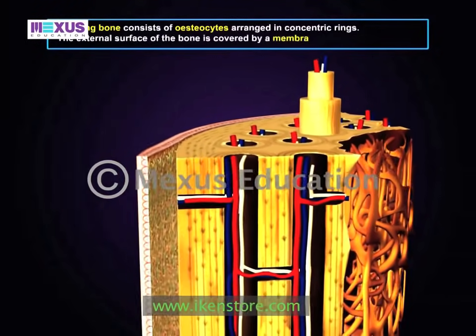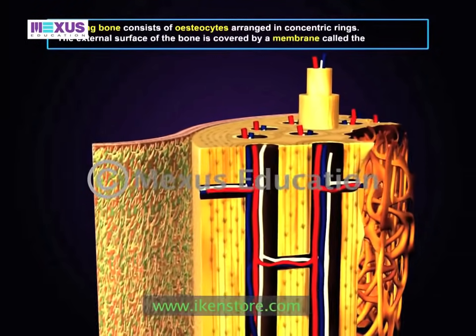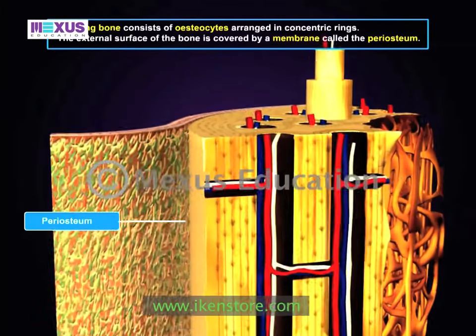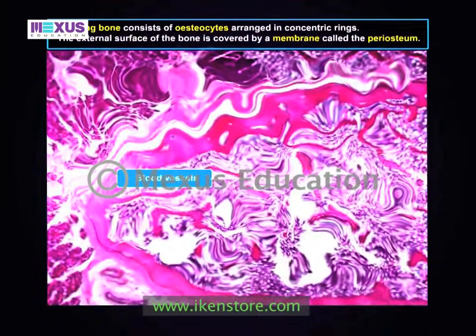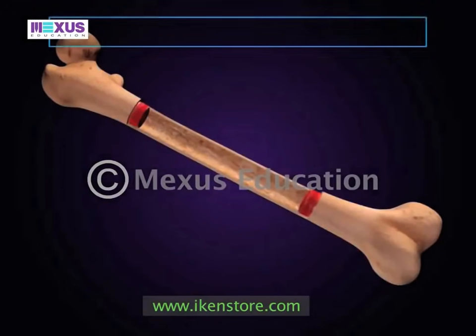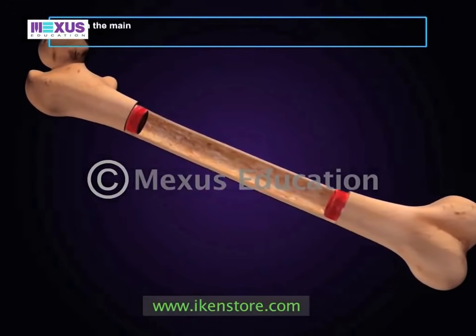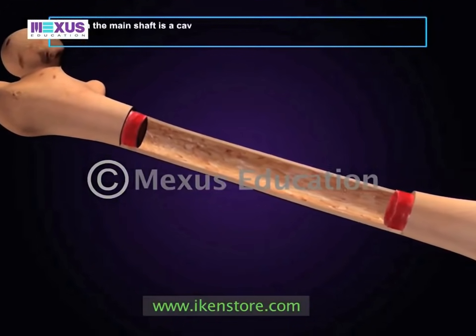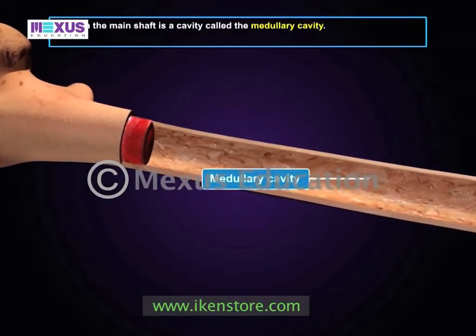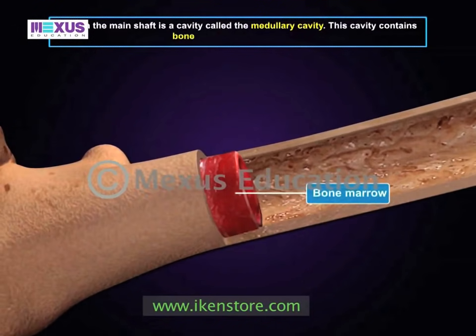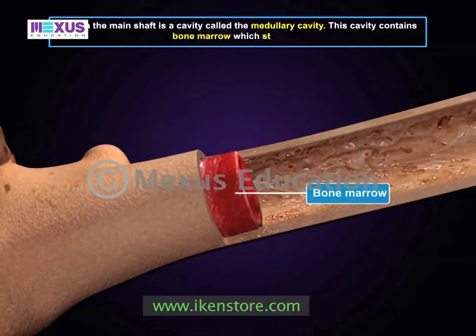The external surface of the bone is covered by a membrane called the periosteum, which is richly supplied with blood vessels. Within the main shaft is a cavity called the medullary cavity.